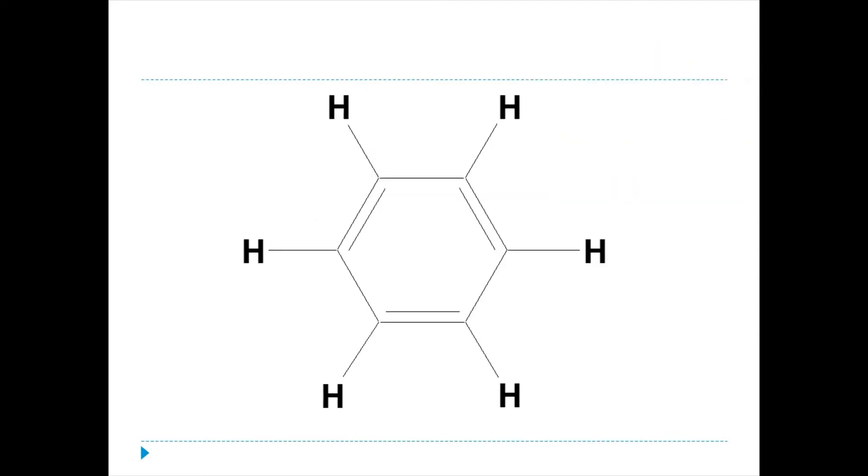This is a benzene ring. Let's calculate and count how many sigma bonds are there. One, two, three, four, five, six between the carbon and hydrogen. But between carbon and carbon, seven, eight, nine in the single bonds, ten, eleven, twelve in the double bonds. And we also have three pi bonds in benzene ring.